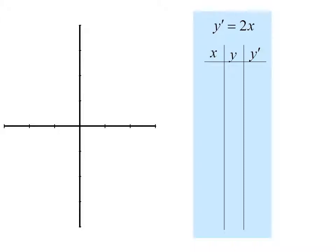We will start with y prime equals 2x. We pick a value for x and a value for y, in this case 0, 0. So y prime equals 0. Now, we draw a short line segment with a slope of 0 across the point 0, 0.